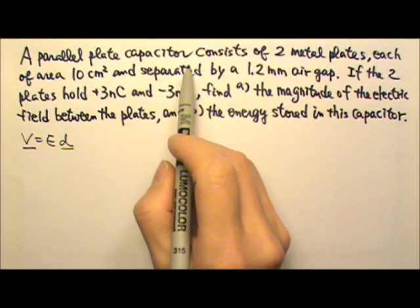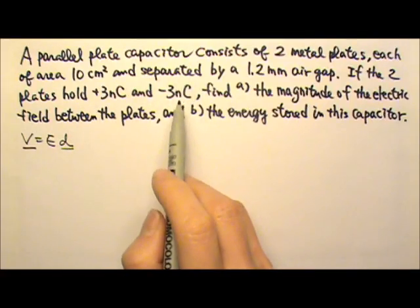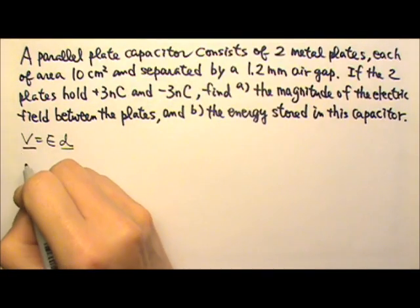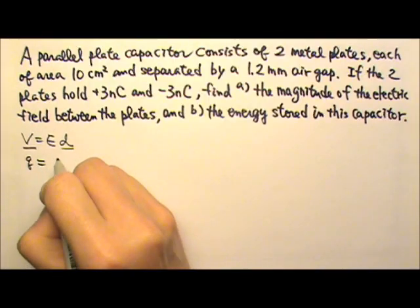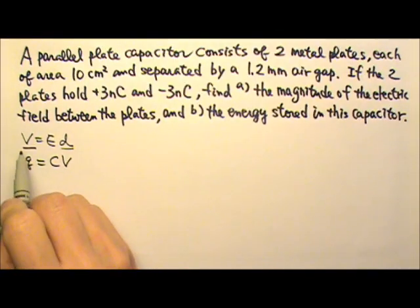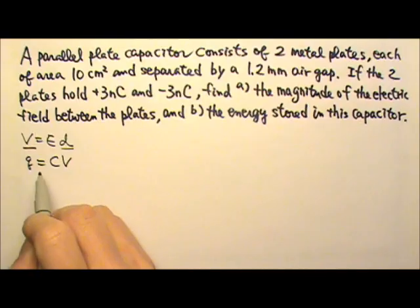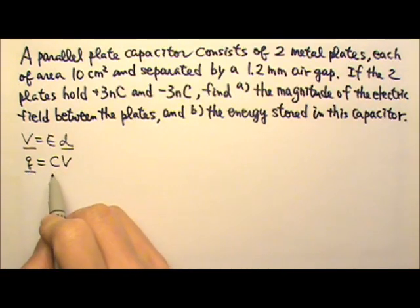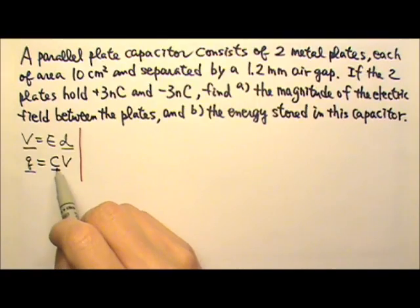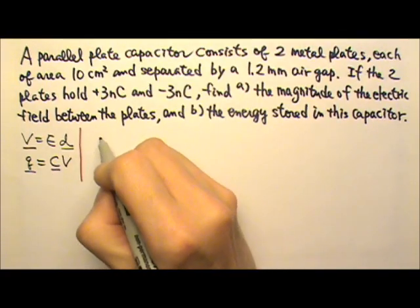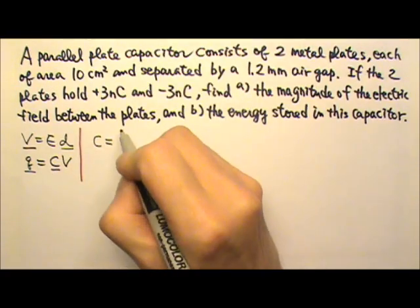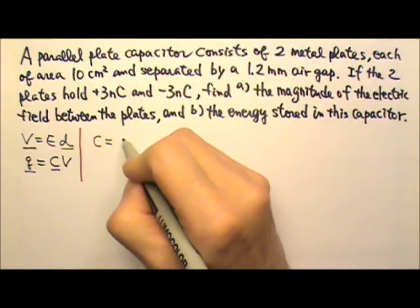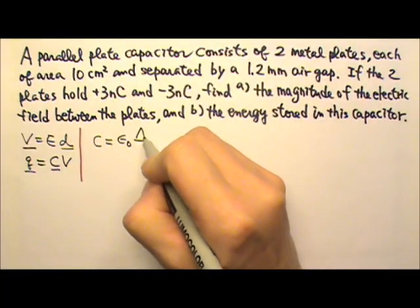This is a capacitor and we know the charge is held by the capacitor. So we have Q equals CV. To find the V, we already have the charge, we just need to find the capacitance. And yes, we do have enough information to find the capacitance, because the capacitance for a parallel plate capacitor is epsilon naught A over D.